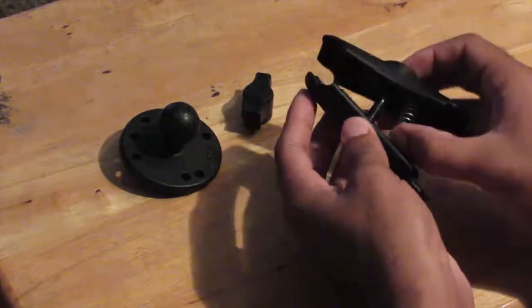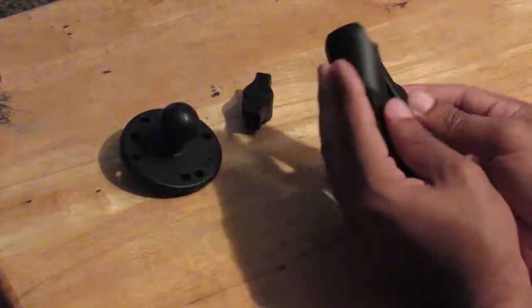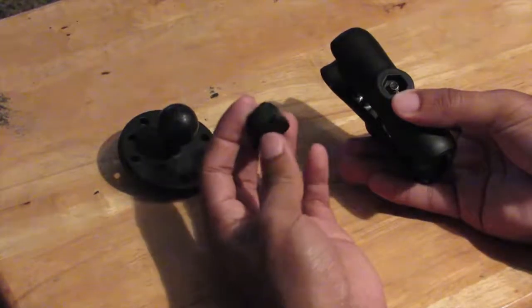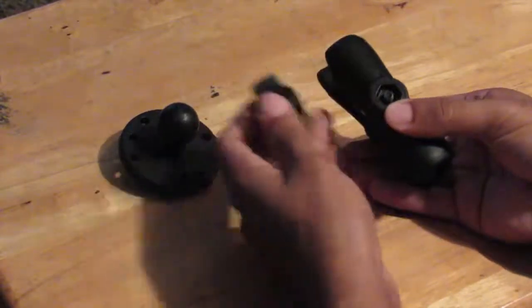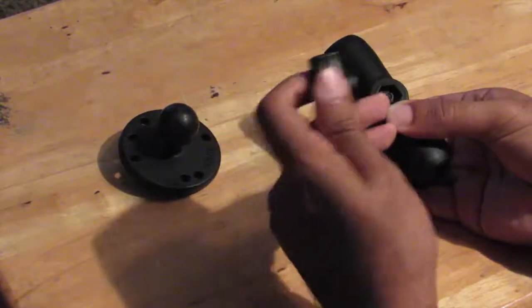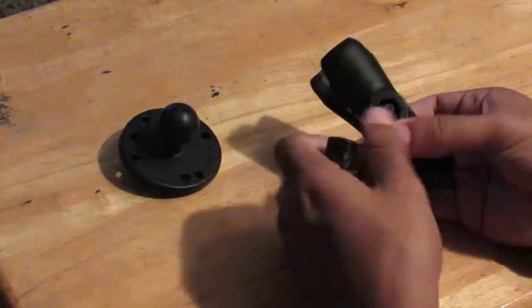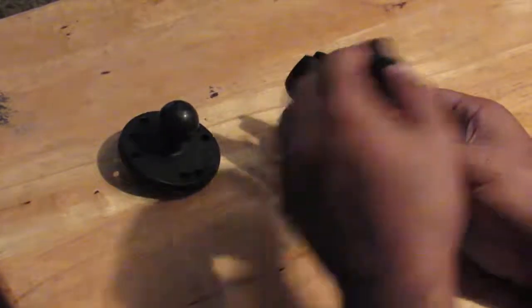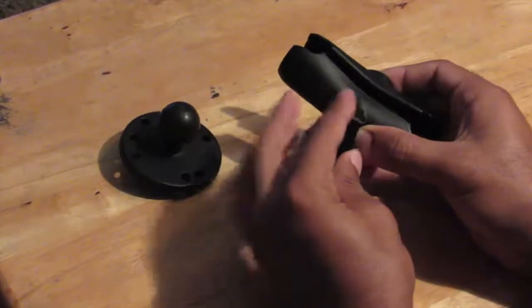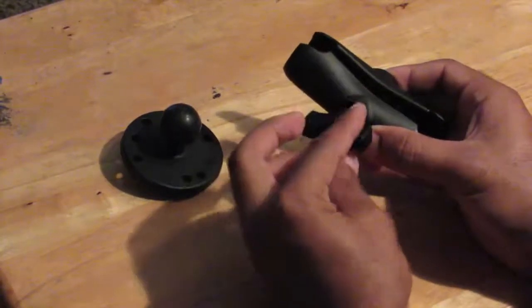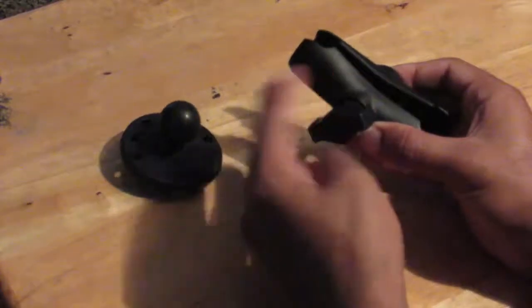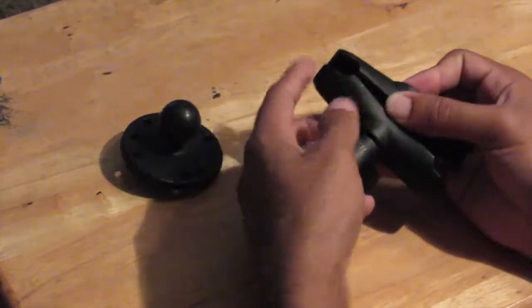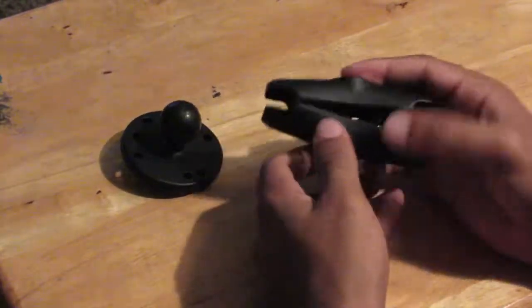And after that, get this part which will actually help tighten up the mount, which I believe that this is the reason why it all came apart, is because this part probably loosened so much that all this just came apart. So just simply get it and tighten up, and that's pretty much it.